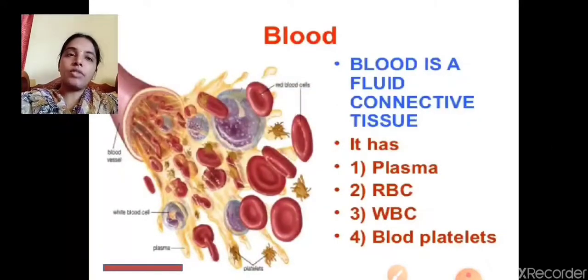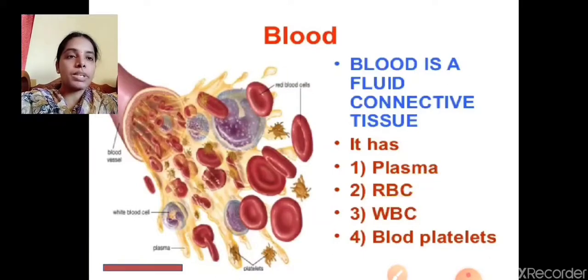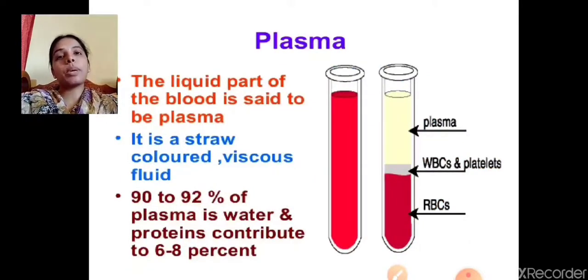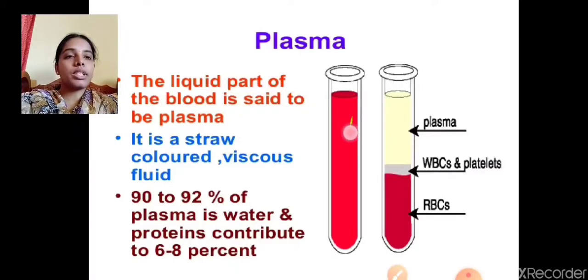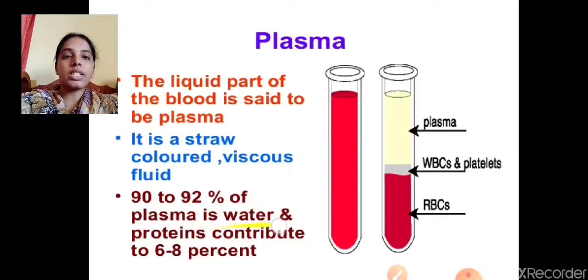Blood is called a fluid connective tissue. The components present in blood are plasma, RBC, WBC, and blood platelets. Plasma is the liquid part of the blood — it is a straw-colored, viscous fluid. Nearly 90 to 92 percent of the plasma is water, and proteins contribute 6 to 8 percent.